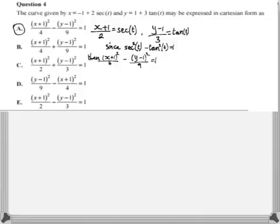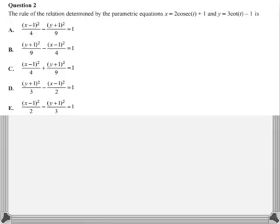Easy, yeah? Let's try the next one. Now we have the rule of the relationship determined by the parametric equations. Here we have x in terms of a cosec function and y in terms of a cot function. And we have to find, again, the Cartesian equation of this. So how would this work?